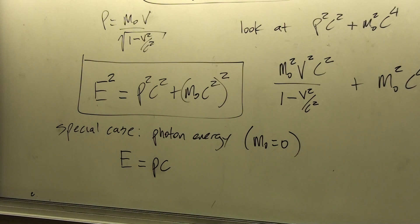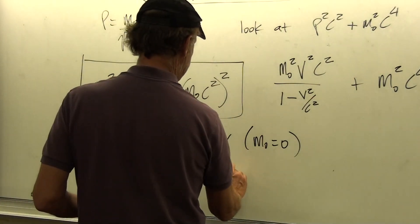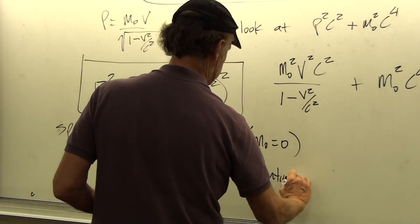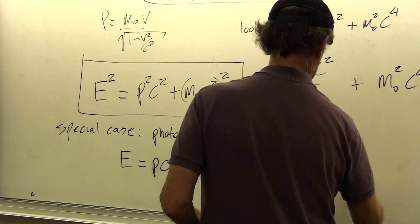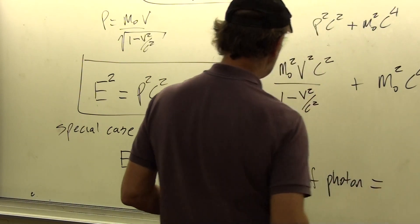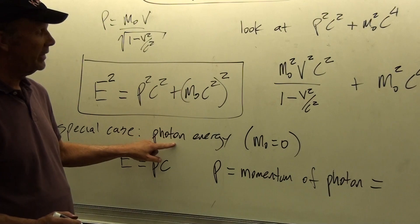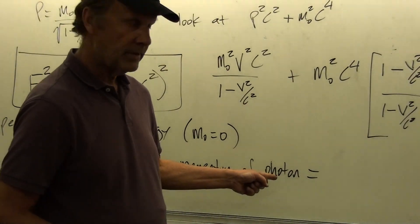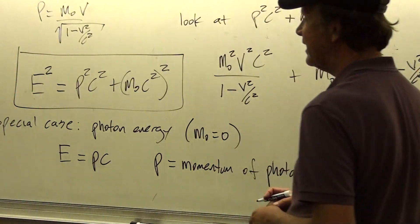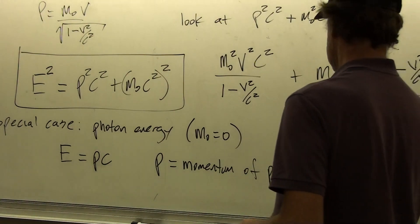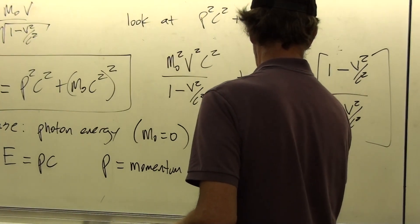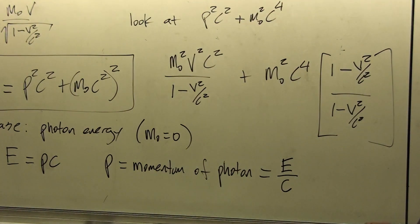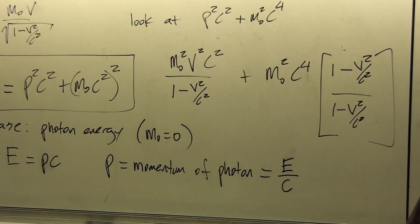That means the momentum p of a photon is not equal to zero, even though the photon has zero mass. It still has momentum because it has, in essence, an energy equivalence associated with it. So it's equal to the energy of the photon divided by the speed of light. That's a result we'll look at later.